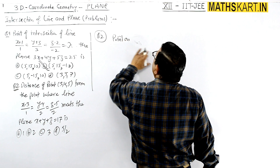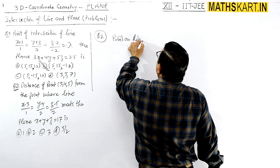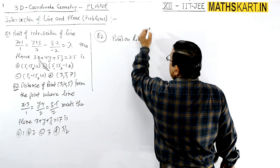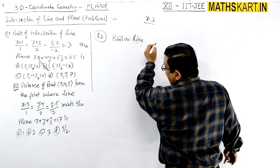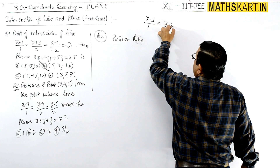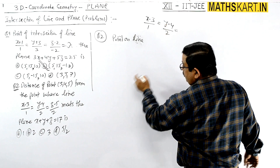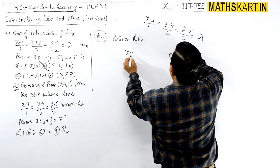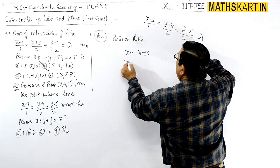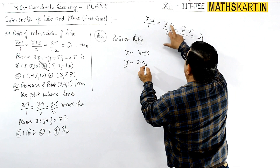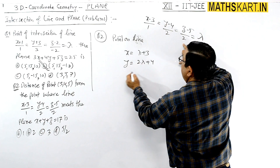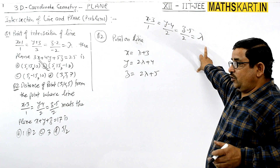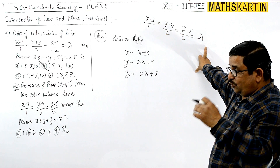Question 2: find the distance of a point from where the line meets the plane. A point on the line (x-3)/1 = (y-4)/2 = (z-5)/2 = λ gives coordinates x = λ + 3, y = 2λ + 4, z = 2λ + 5.